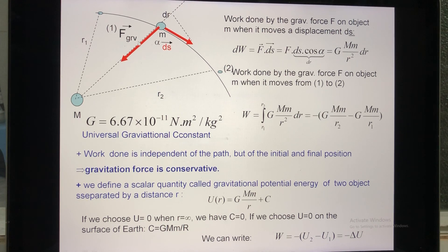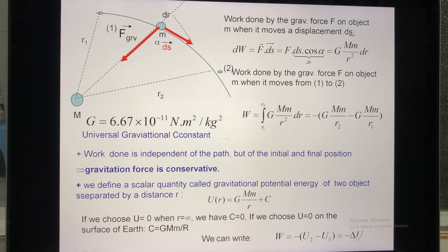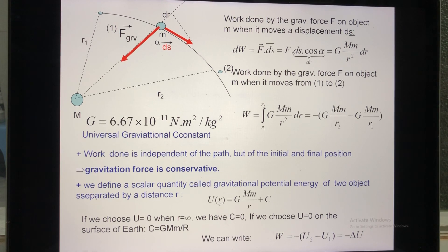Remember, we are considering only gravitational forces, which is a conservative force because the work it does depends only on distance. The relationship W = −ΔU applies to a system that contains only conservative forces. Here, C is a constant in the potential energy expression. If you set potential energy equal to zero when R equals infinity, then C equals zero.